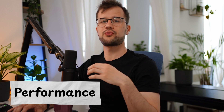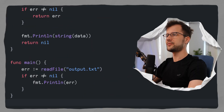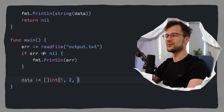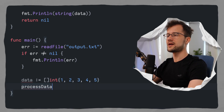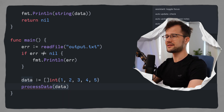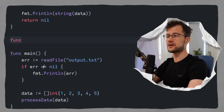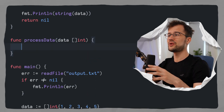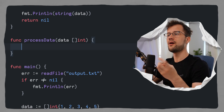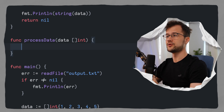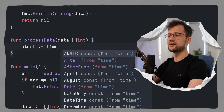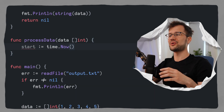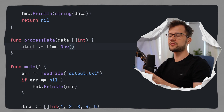Now let's look at another use case: measuring the performance of a specific function, or for instance benchmarking a function against another one. For that, let's jump to our main function and declare a data slice, which is just an int slice, and insert values one, two, three, four, five. After that, we are going to call a processData function that takes in the data slice. Let's quickly create this function — func processData — with the data slice as an argument of type int slice. In this function, we want to measure the performance or speed of execution, so we make use of the time module in Golang. We say start := time.Now(), which returns the current local time.